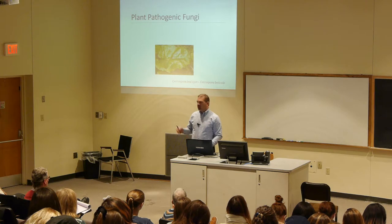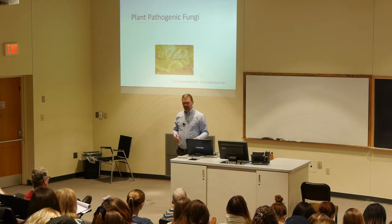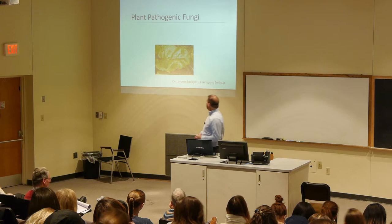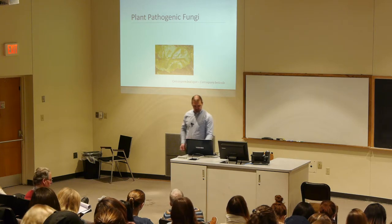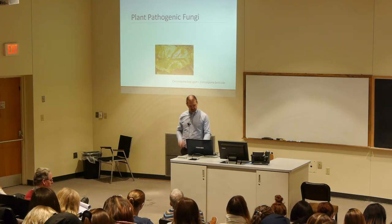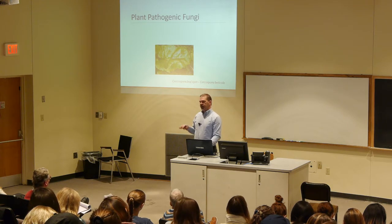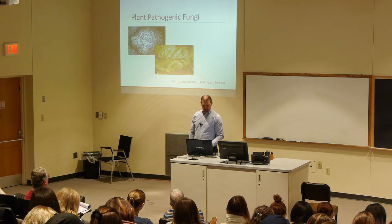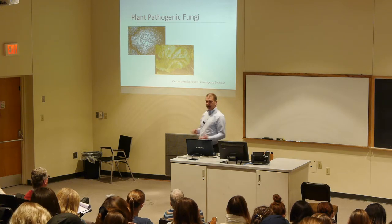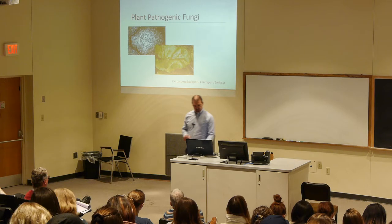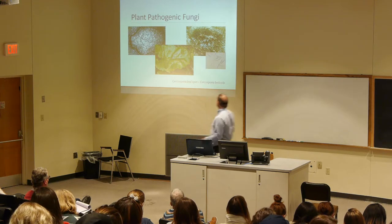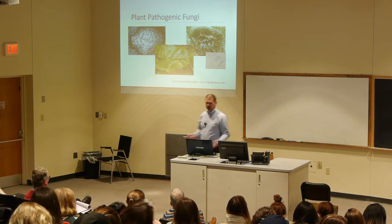Here's one our lab actually works on: Cercospora leaf spot on sugar beet, caused by Cercospora beticola. It causes little spots with a red halo that eventually burn the leaf down and reduce yield. They produce pseudostromata in the lesion, which you have to look at under a microscope or hand lens, and those pseudostromata produce long, needle-like spores.